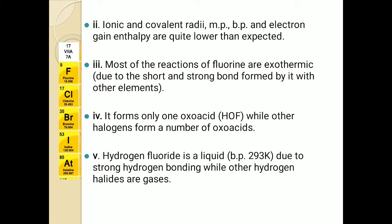The next property: fluorine forms only one oxoacid. An oxoacid means an acid which has an oxygen atom in it — for example, H₂SO₄ is an oxoacid. Fluorine forms only one oxoacid, while other halogens form a number of oxoacids. We are going to learn that later.